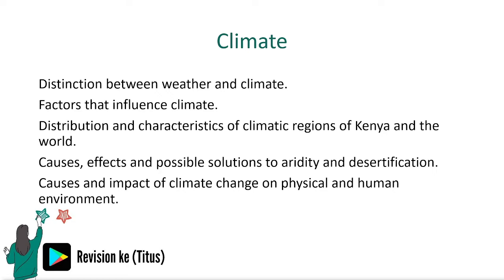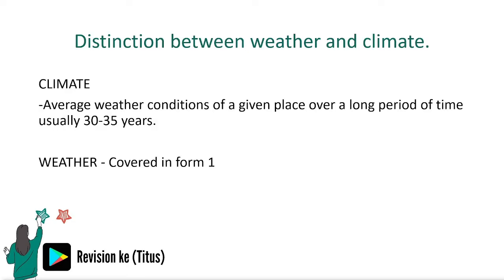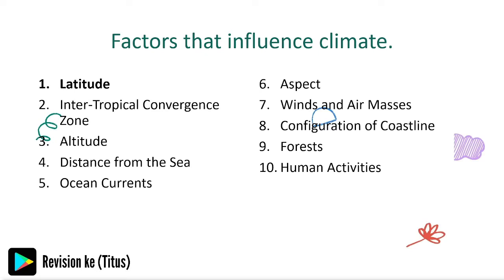We are first going to define weather, which we defined in Form One. Now we are going to define climate, which is the average weather conditions of a given place over a long period of time, usually 30 to 35 years. What are the factors that influence climate? You can study these alongside the factors that influence weather and see what differences you can spot.